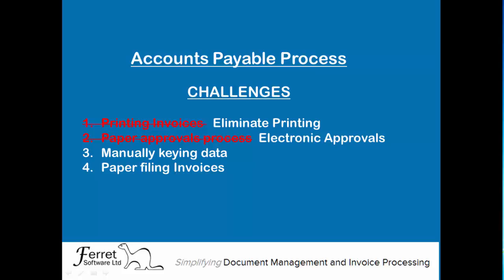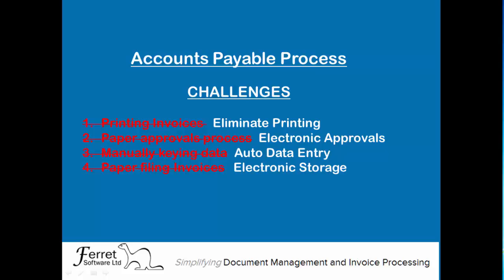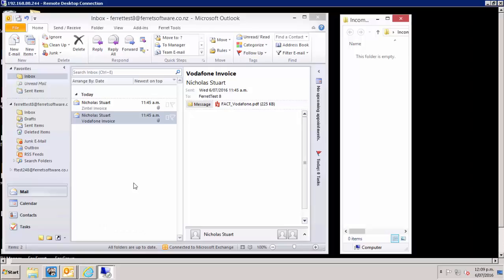Once approved, you manually enter the line item data into your accounting system. With Ferit, this is automatic. Finally, you file the invoices in paper folders, whereas with Ferit you store them electronically. In this demo video, I will show you how to streamline your accounts payable process.